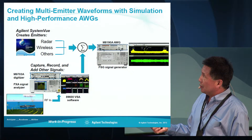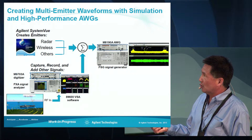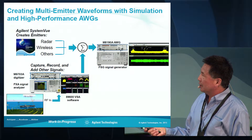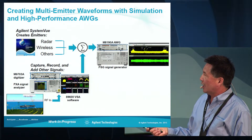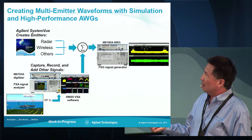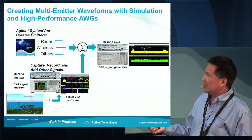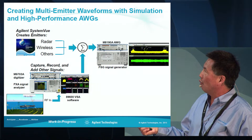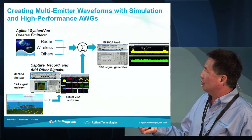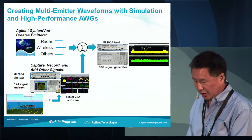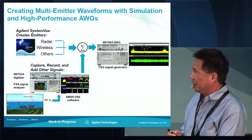We're going to start out using simulation to create radar signals or wireless signals — these could also be other types of signals. To these simulated emitters we're also going to capture signals with our digitizer and our PXA signal analyzer. These captured signals can then be combined with the simulated wireless emitters to create a composite output waveform that can be downloaded to an AWG, and also using a PSG we can create the multi-emitter signal.